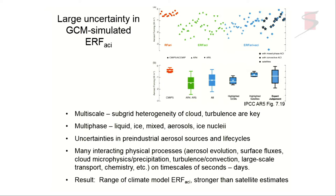Clouds are multi-phase — liquid, ice, mixed — and aerosols themselves have lots of issues with phase. Ice nuclei we don't understand that much about. We have a lot of uncertainties in pre-industrial aerosol sources and life cycles, a ton of physical processes interacting in all models, but in particular GCMs that affect aerosol-cloud interactions on timescales of seconds to days. So it's not just the processes involved, but the discretization of those processes in time as well as space. The result is that we have a range of climate model aerosol indirect effects, and in general those from CMIP5 models tend to be stronger than some satellite-based estimates of what the effects should be.